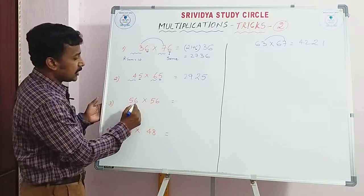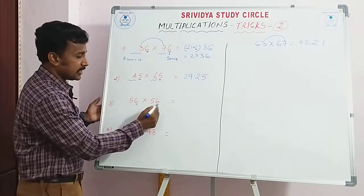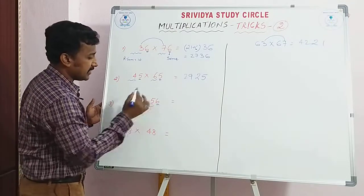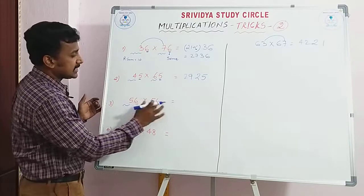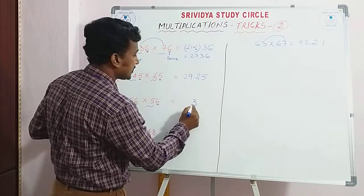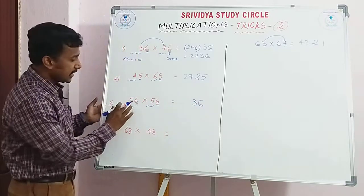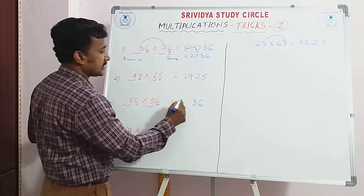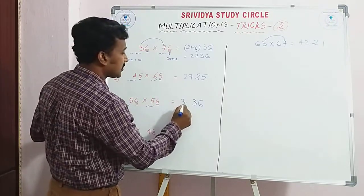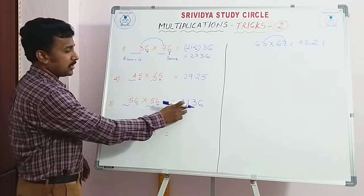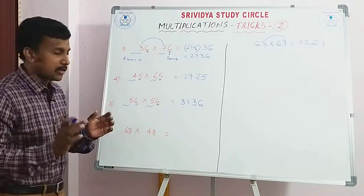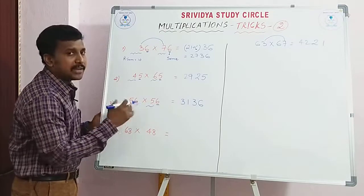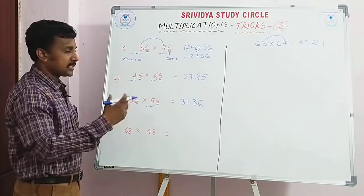See here also, units digits same. Units digits same. Remaining digits sum 10. Okay. So 6 into 6, 36. Now 5, 5's are 25. Plus 6. 25 plus 6, how much? 31. Following or not? 5, 5's are 25, plus the same digits, 25 plus 6 is 31.